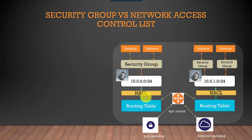The network access control list manages the traffic — both incoming and outgoing — going into the subnets. If you look at the diagram, security groups manage security at an instance level, while the network access control list, or NACL, manages security at a subnet level.